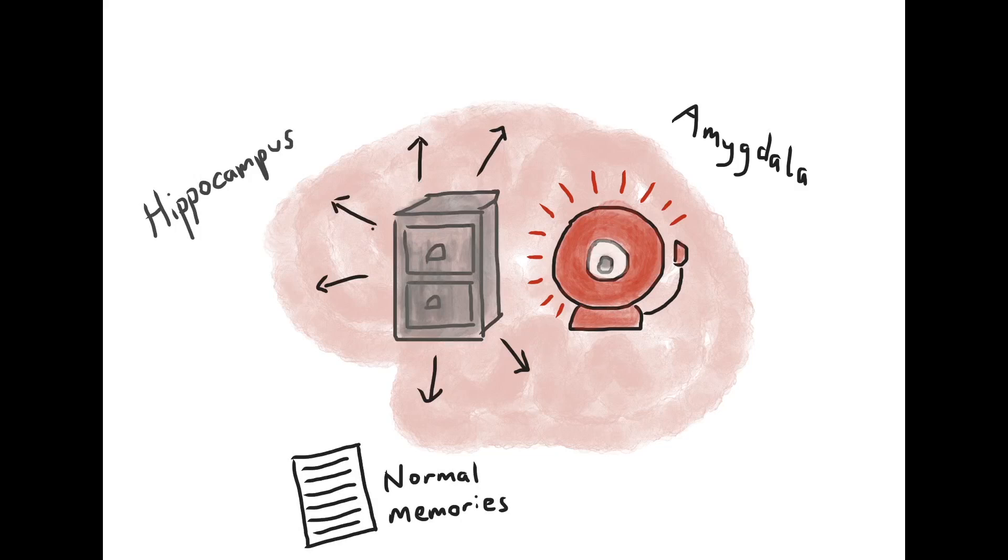Your amygdala, your brain's alarm system, sends a signal to the rest of your brain and your body. Your heart starts racing so that oxygen is pumped around your body to your muscles so that you are ready for action. A number of hormones and neurotransmitters are released, such as cortisol, adrenaline, and noradrenaline. This is your body's fight-flight-freeze response.